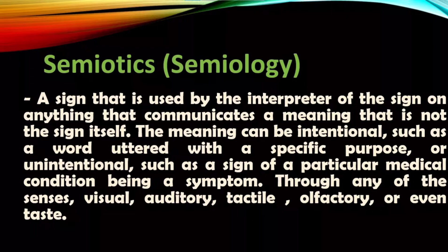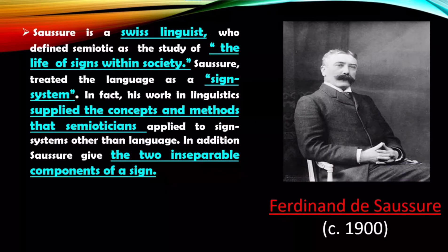Furthermore, semiotics is a science system which explores how words and other signs create meaning in society. Ferdinand de Saussure defined semiotics as the life of signs within society and treated language as a sign system. His works in linguistics supplied the concepts and methods that semioticians applied to sign systems other than language. Saussure gives two inseparable components of a sign: the signifier and the thing being signified cannot be separated in giving meaning to a particular thing — specifically in speaking, writing, and giving a sign for deaf people. The sign is born because of society, and people's consciousness opens because of signs.